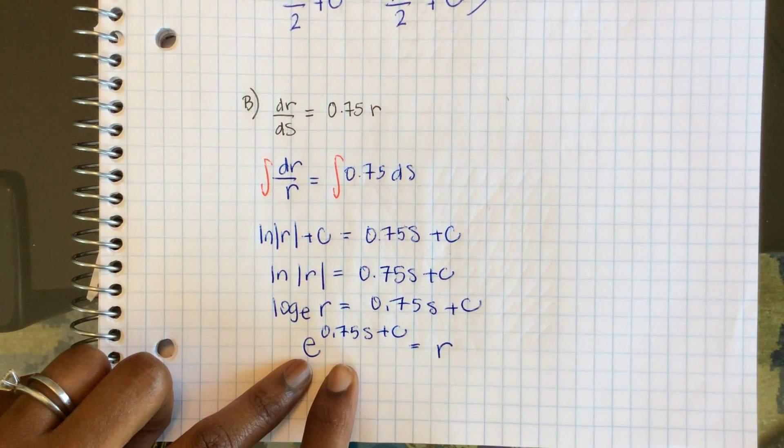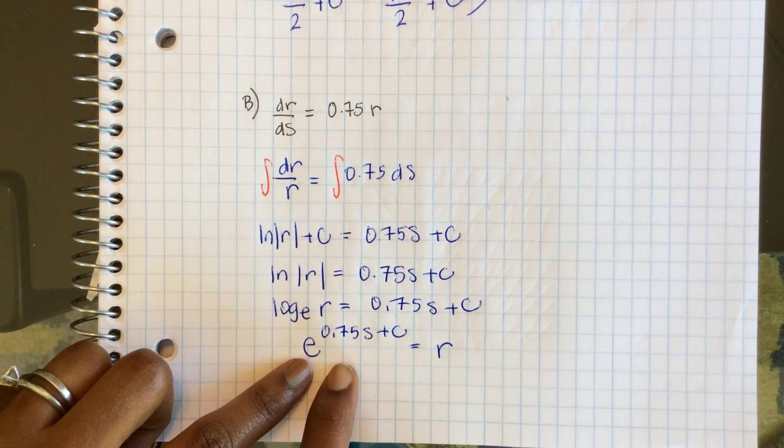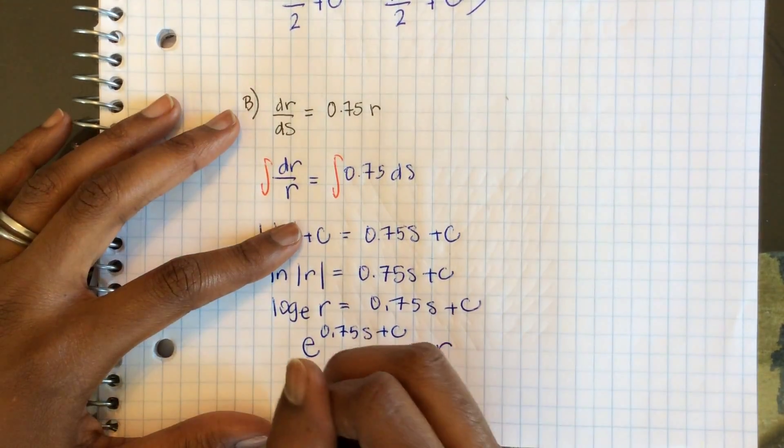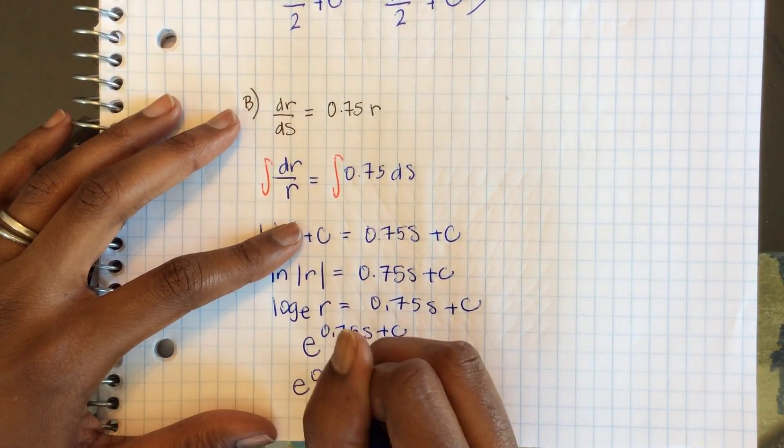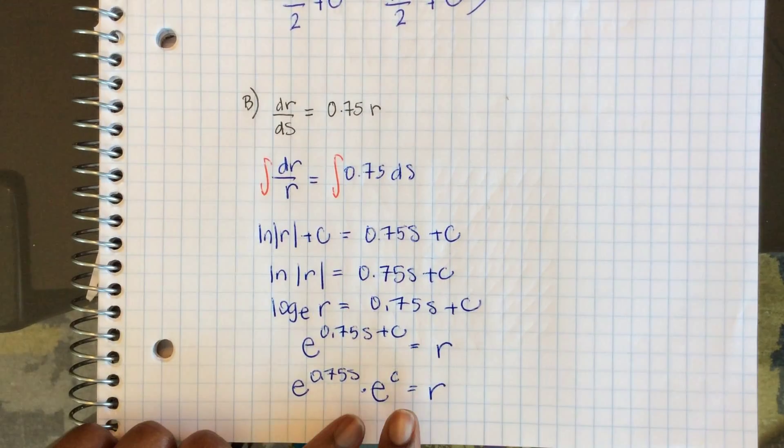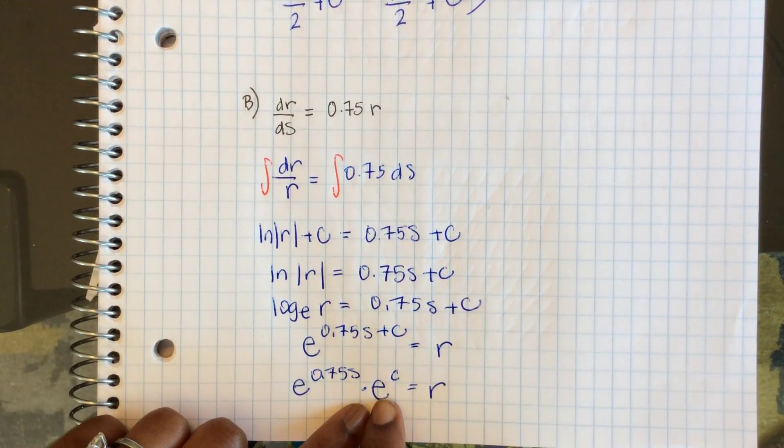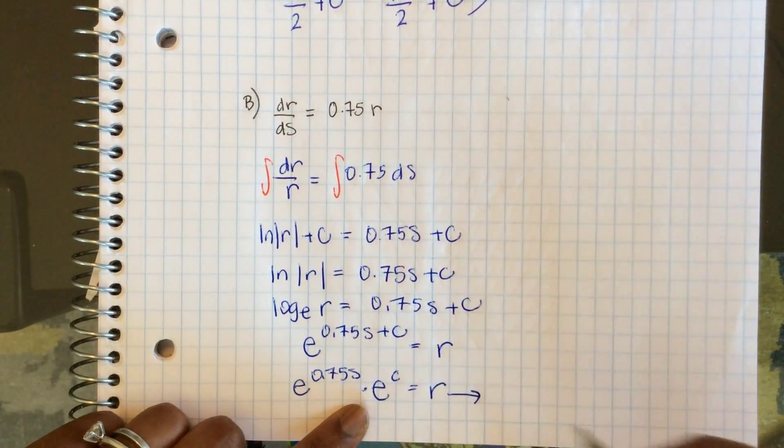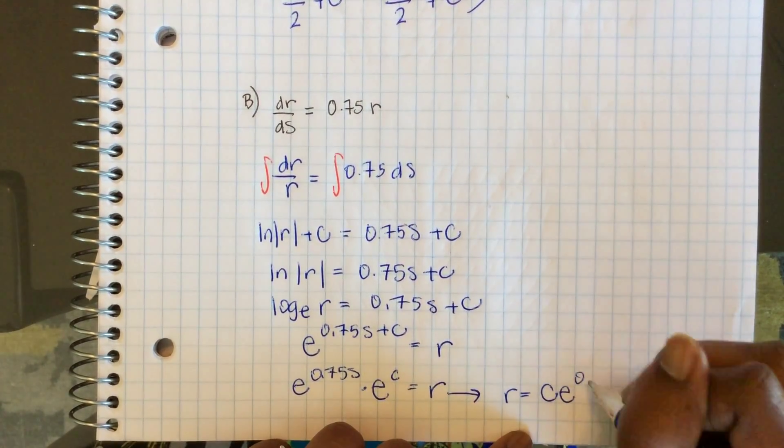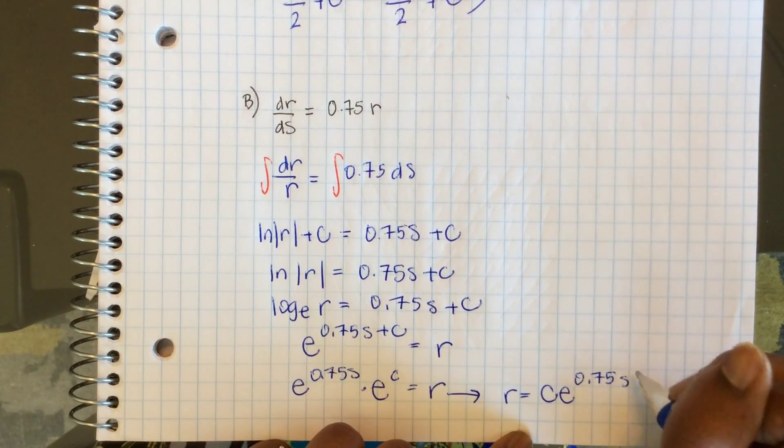Now, using properties of exponents backwards, if I'm adding these two exponents, that's e to the 0.75s times e to the c equals r. And remember that e to some constant is still going to be a constant times e to the 0.75s.